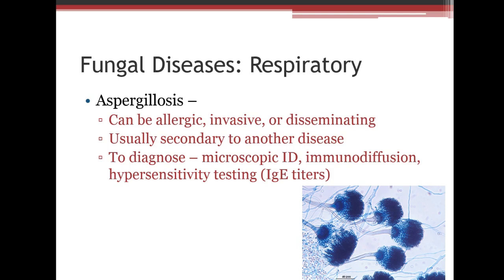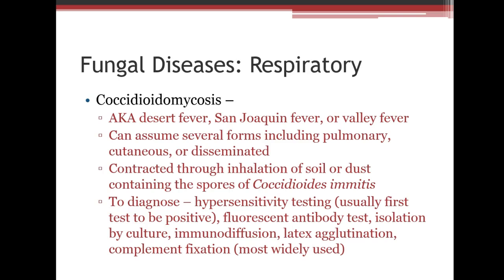Coccidioidomycosis is also called desert fever, San Joaquin fever, or valley fever. It is usually pulmonary but can be cutaneous or disseminated. It's acquired by inhaling spores of Coccidioides immitis from soil or dust. Diagnostic methods include hypersensitivity testing, fluorescent antibody testing, culture isolation, immunodiffusion, latex agglutination, and complement fixation — quite a variety of tests.